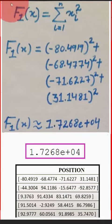Now we will put the values in this function. First we have minus 80.4919 squared, plus second value, plus third value, and fourth value, and we got the approximate value as the solution.